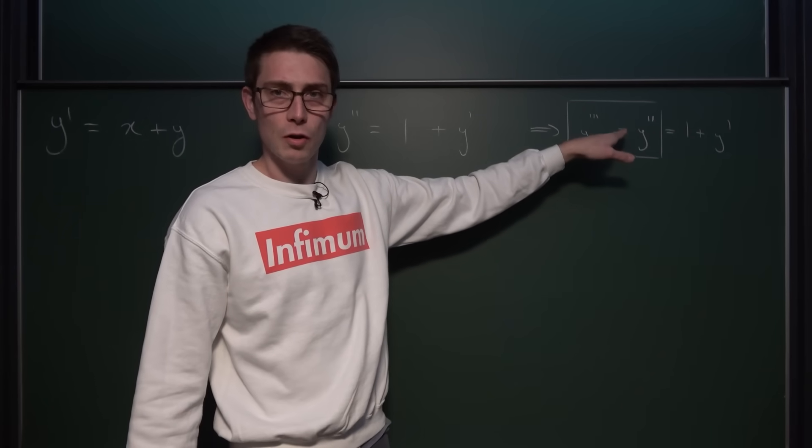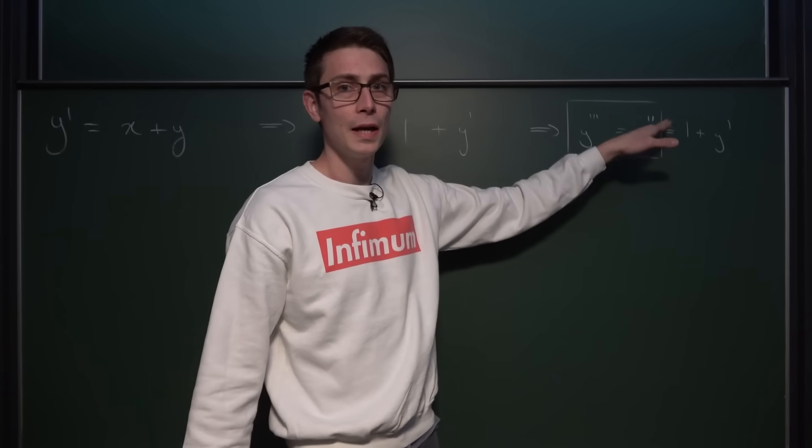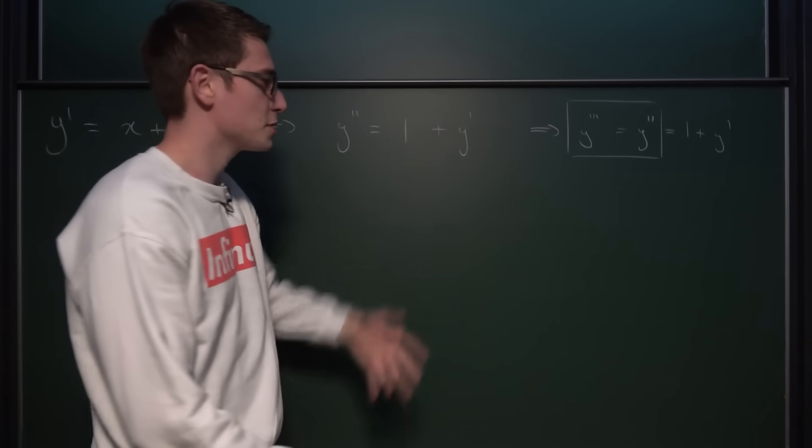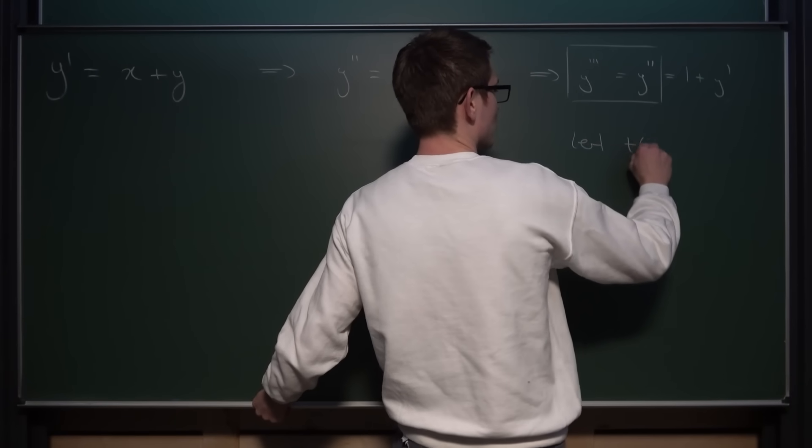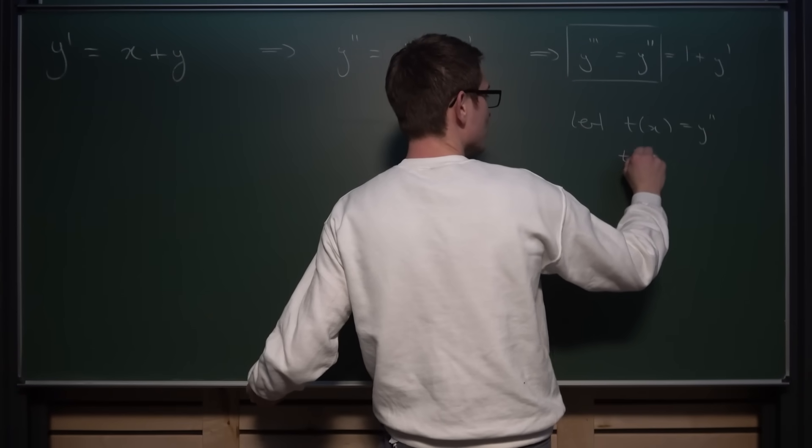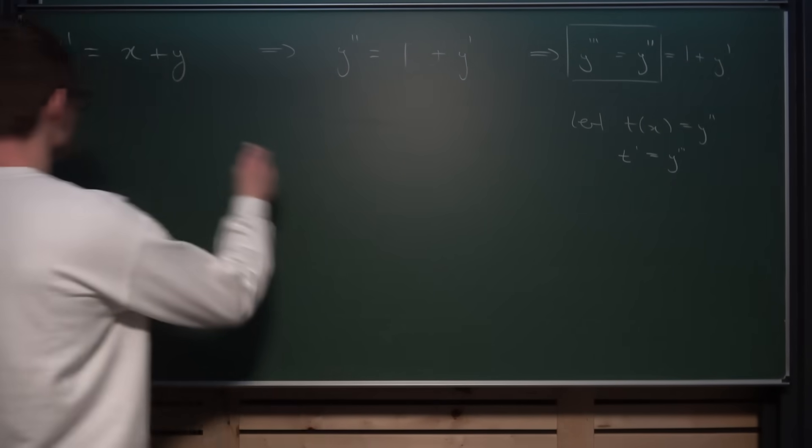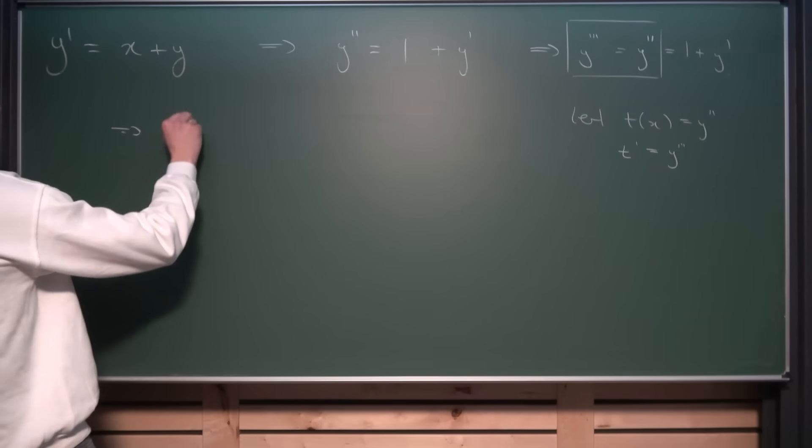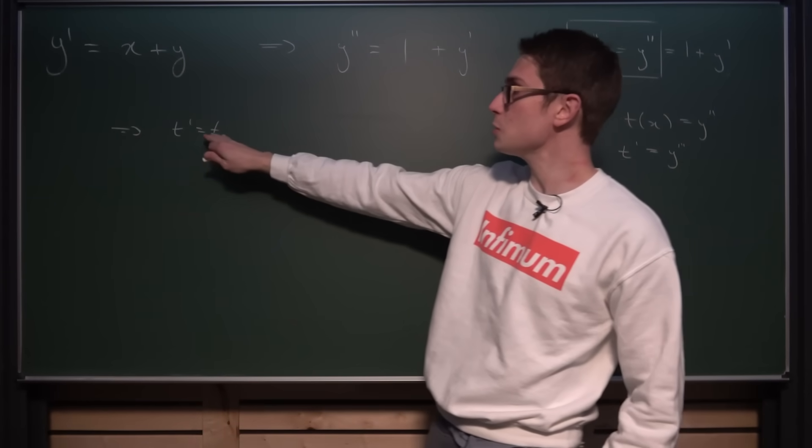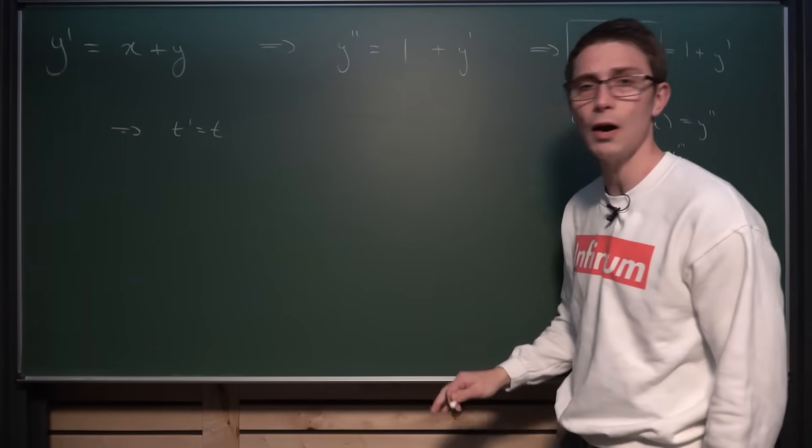Now, we have the differential of a function, you could say. Our function being Y'' is going to turn into itself once again. So if we introduce a simple substitution here, let T of X be equal to Y'', then the derivative of T is going to be the third derivative of Y. If we plug this in, then we are going to get the relationship that T' is equal to T. And we all know what the unique solution to this differential equation right here is if we don't take trivial solutions into account.